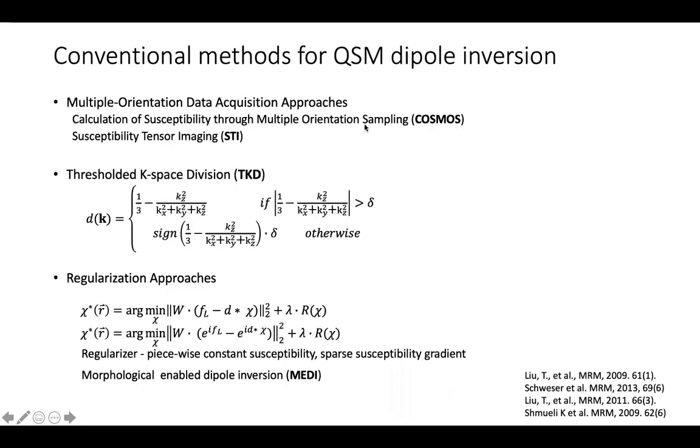There are many conventional methods to do QSM reconstruction. The first is to acquire multi-orientation data. However, it is time-consuming to acquire the dataset and infeasible in clinical practice. In single-orientation QSM reconstruction, TKD and regularization approaches are widely used. However, these approaches have difficulty to get a robust QSM in clinical practice.